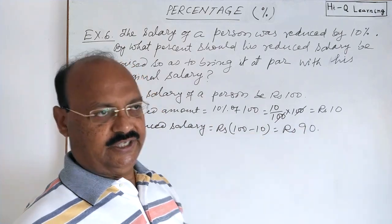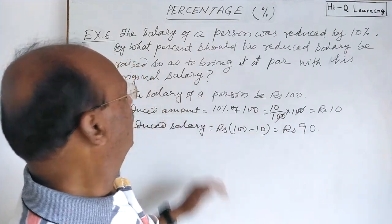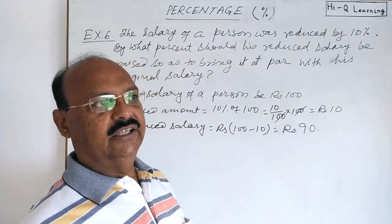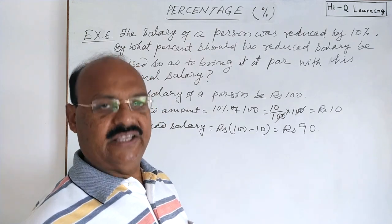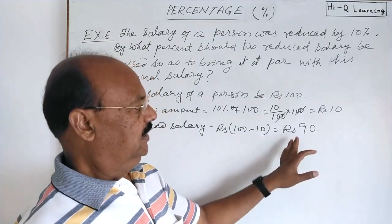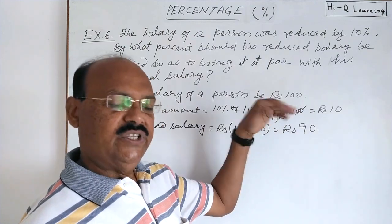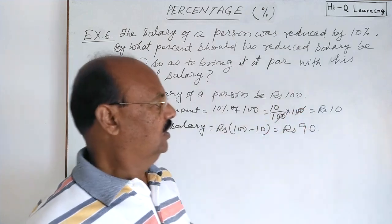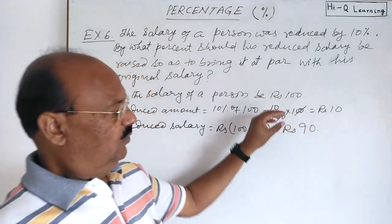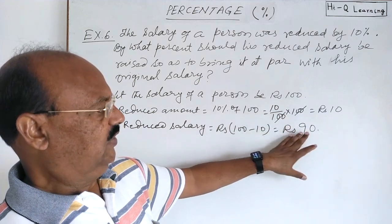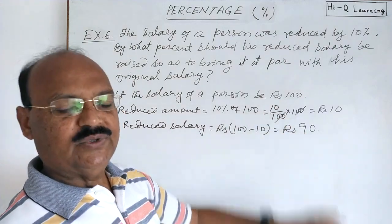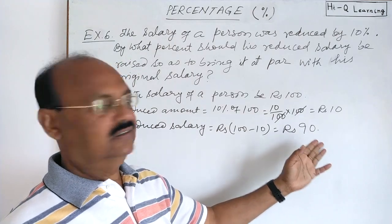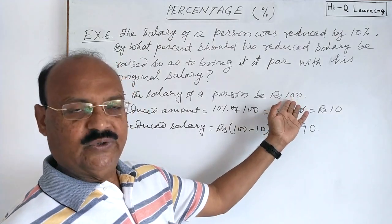So now the salary of this person becomes rupees 90. The question is: how much percent should this salary of 90 be increased so that it becomes equal to the original salary, i.e., 100? We have to add something to 90 — definitely rupees 10, since 90 plus 10 is 100, which equals the original salary.